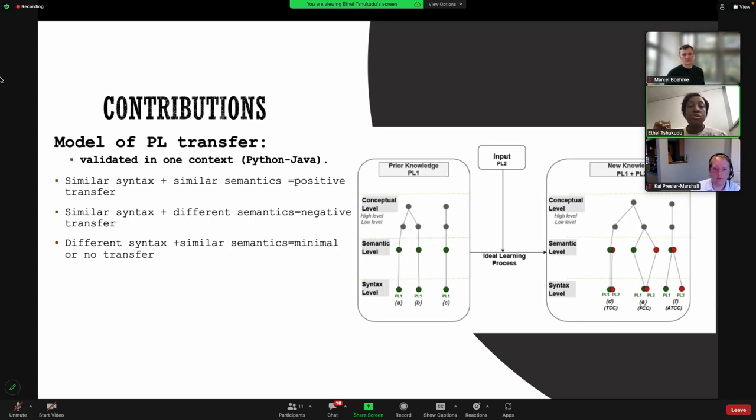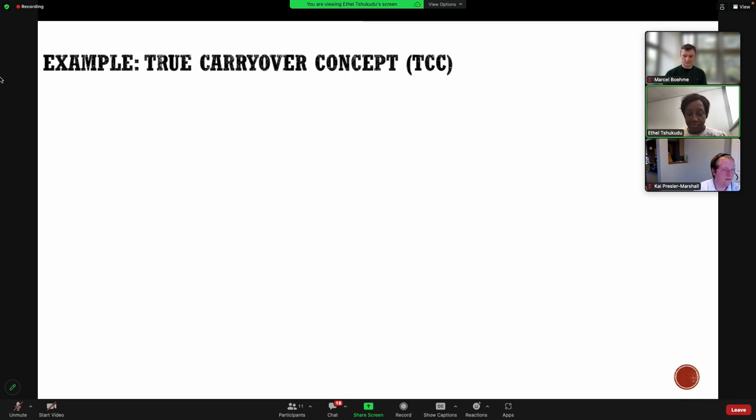But then once you introduce the students to the second programming language, they have this new knowledge where they will now be linking programming language that they already know to this new programming language that you are teaching them. And that means the knowledge structures start to expand. As you see, there are different types of branches, which I will explain. But the whole idea is that they will be faced with three types of constructs. When you teach them the second programming language, they may see constructs.